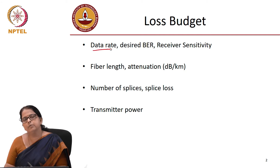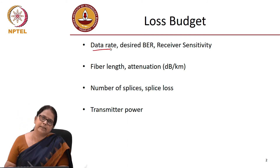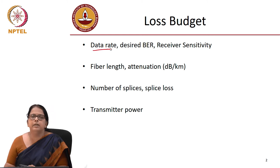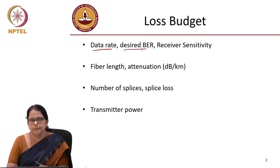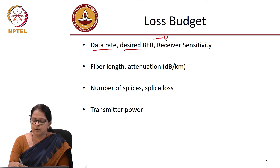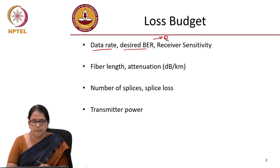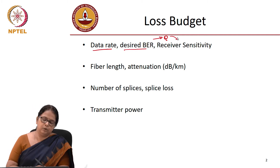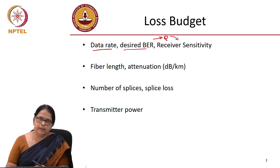The next question you want to ask is: what is the desired bit error rate? Is it 10⁻¹² or 10⁻⁹, or any number in between? The second parameter is the desired bit error rate. Once you know the desired bit error rate, you know the corresponding Q for that BER. Once you know Q, you can find out what is the receiver sensitivity that can support that specific Q. This we have discussed when we were discussing data quality.